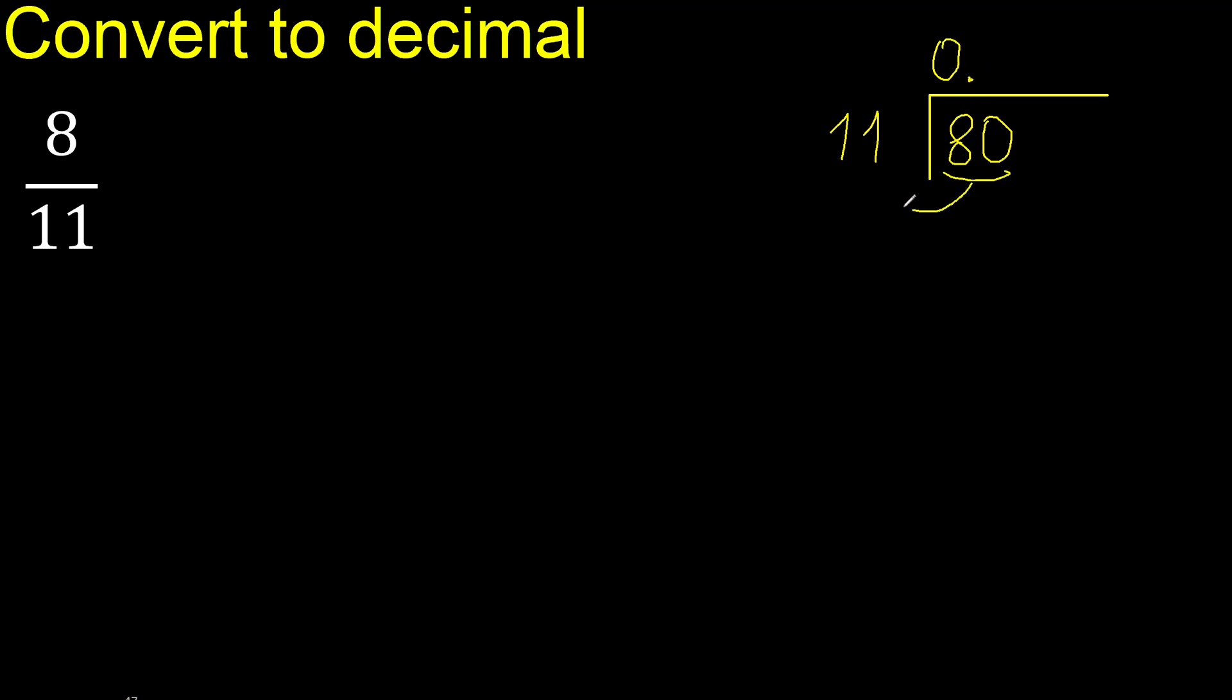80. 80 is not less, ok. Therefore with 80, 11 multiplied by which number is nearest to 80 but not greater? 11 multiplied by 9 is 99, is greater. Therefore multiplied by 8, 88 is greater. Multiplied by 7, 77, ok, is not greater. 80 minus 77 is 3.